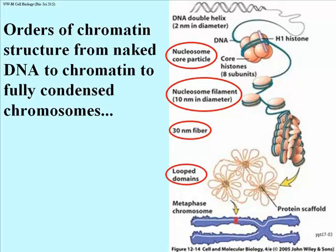Some of these transitions — from nucleosome or 10 nanometer filaments to 30 nanometer fibers and to looped domains — are the result of the addition, or accretion, of proteins to these structures. We refer to the histone proteins as the basis for nucleosome structure, and other proteins that associate with DNA to form chromatin and ultimately chromosomes as non-histone proteins. Non-histone proteins associate with the 10 nanometer filaments to create these higher-order 30 nanometer and looped domain structures.